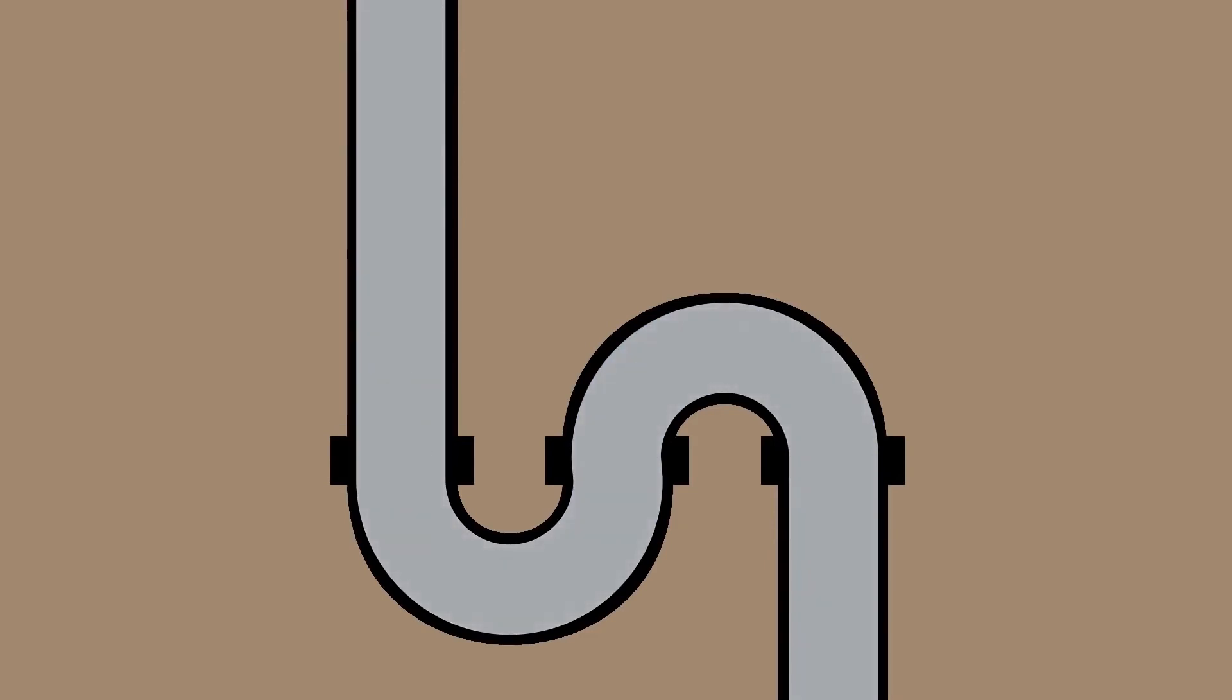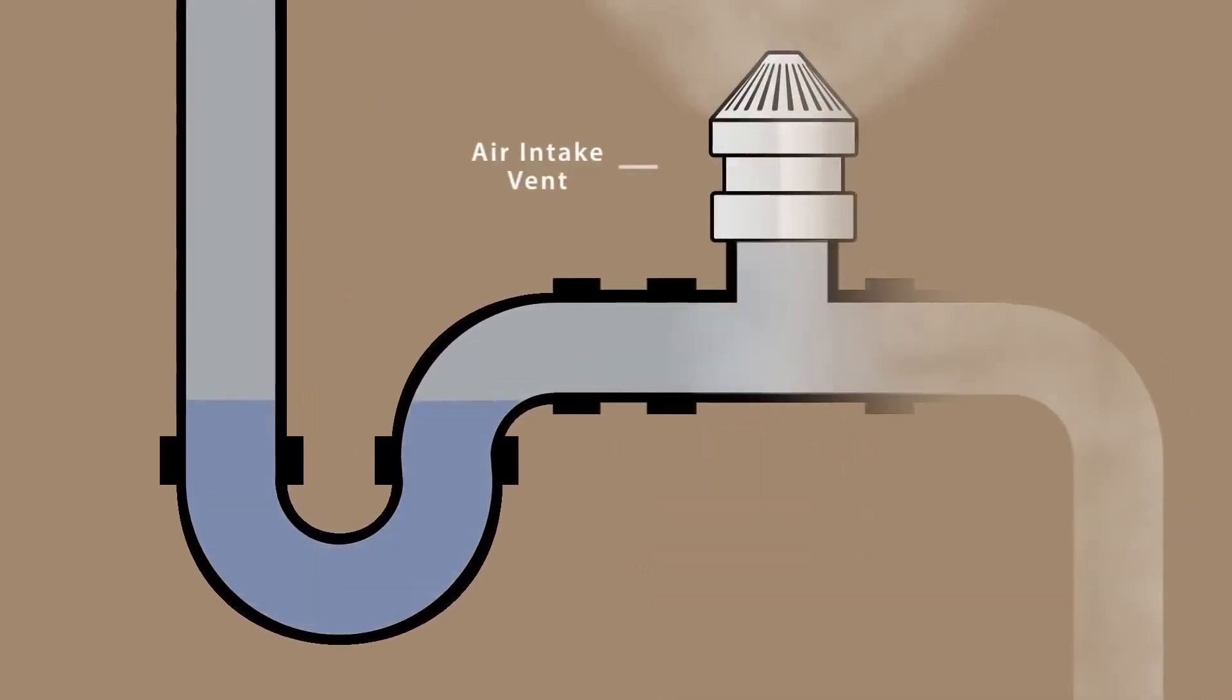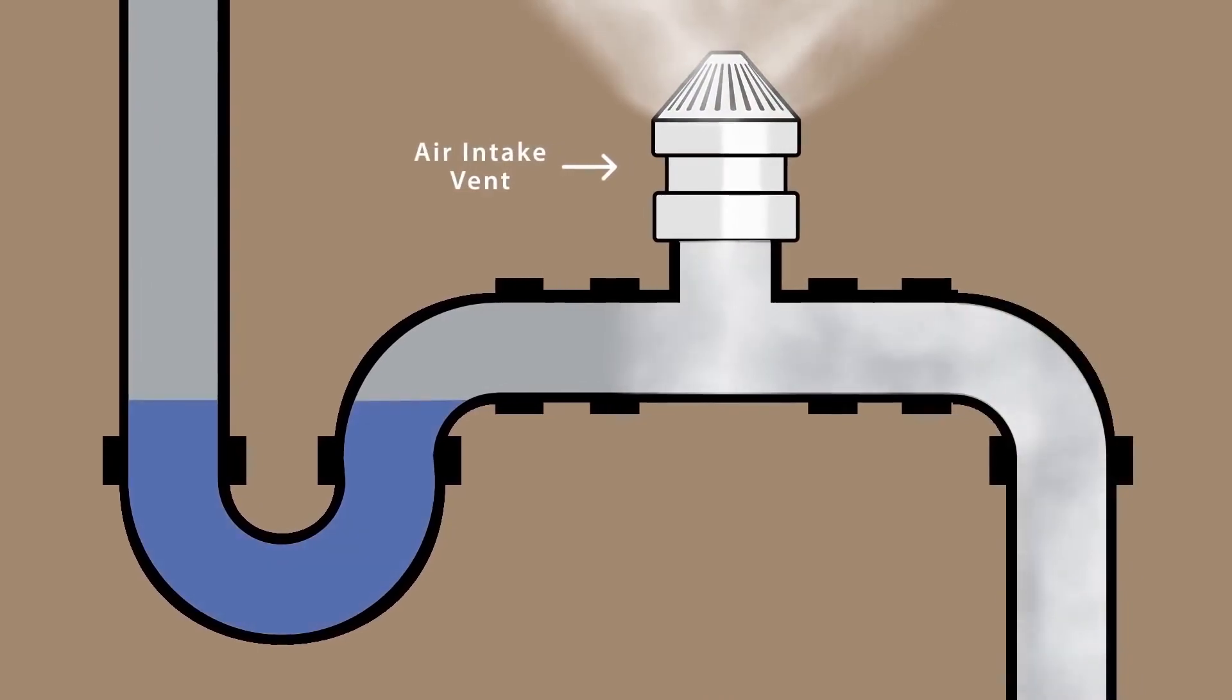Fortunately, an S-trap can be retrofitted into a P-trap, by adding a trap arm with proper access to an air vent.